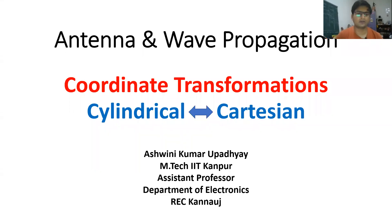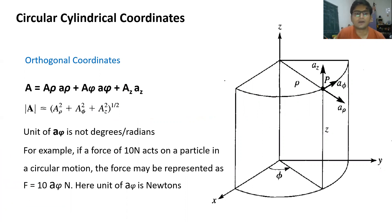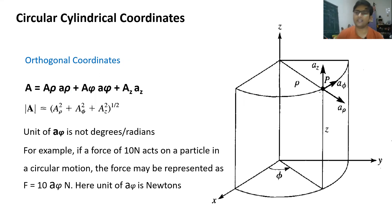Let us talk more about cylindrical coordinates and how we can convert them into Cartesian coordinates and vice versa. In the previous lecture, we discussed cylindrical coordinates and its different coordinates: rho, phi, and z. Rho was the radial distance from the z-axis to the circumference of the cylinder, phi was the angle, and z was the height in the z direction.